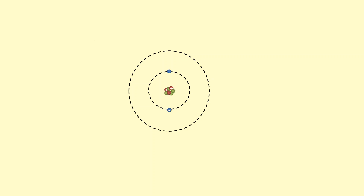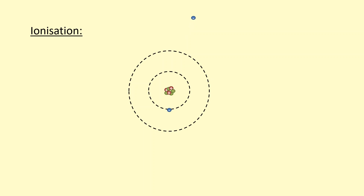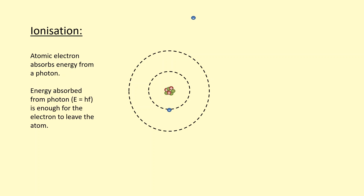Another way in which ionization can occur is if the atomic electron absorbs a photon. The photon needs to provide enough energy for the atomic electron to leave the atom completely. This is still ionization, but instead of a collision with a free electron, it's happening because the electron has absorbed a photon. The energy of the photon is equal to hf, and that needs to be enough for the electron to leave the atom. Again, a positive ion is left over because we've lost a negative charge.